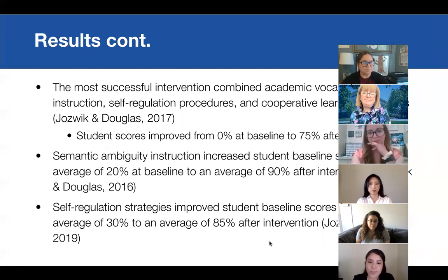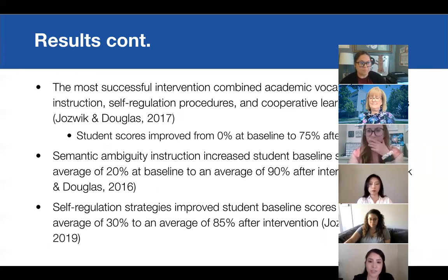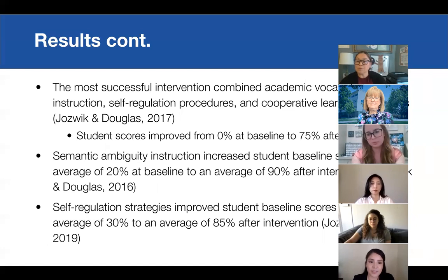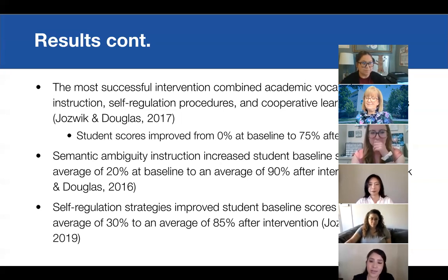The three most successful studies were as follows: the first combined academic vocabulary instruction, self-regulation procedures, and cooperative learning — student scores improved from 0% at baseline to 75% after intervention. Semantic ambiguity instruction increased student baseline scores from an average of 20% to 90% after intervention. Self-regulation strategies improved student baseline scores from an average of 30% to 85%. All of the studies also tracked student progress after the interventions and found that students actually retained the strategies they had learned.